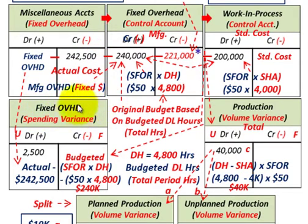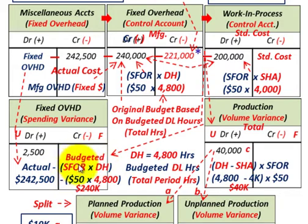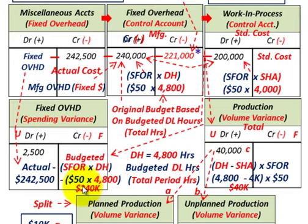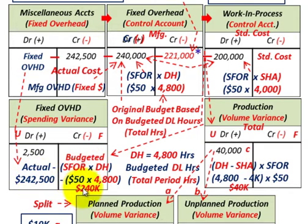For the fixed overhead spending variance, we take actual amount of $242,500 and subtract the budgeted amount — the standard fixed overhead rate of $50 times denominator hours of 4,800 — which equals $240,000. The difference is $2,500, debited as unfavorable because actual cost exceeds budgeted cost.